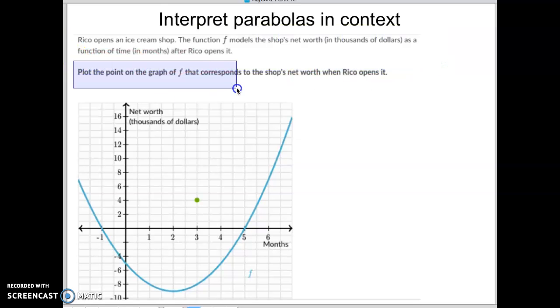Plot the point on the graph that corresponds to the shop's net worth when it opened. Well when it opened, it's called its starting point and we always refer to the starting point as the y-intercept.